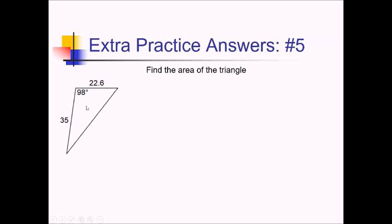For this one, since I've got two sides and the angle between them, and I want the area, I'll use my half sine formula, one half AB sine C. So that's going to be one half times 35 times 22.6 times the angle sine in there, so sine of 98. And now let's use that calculator.